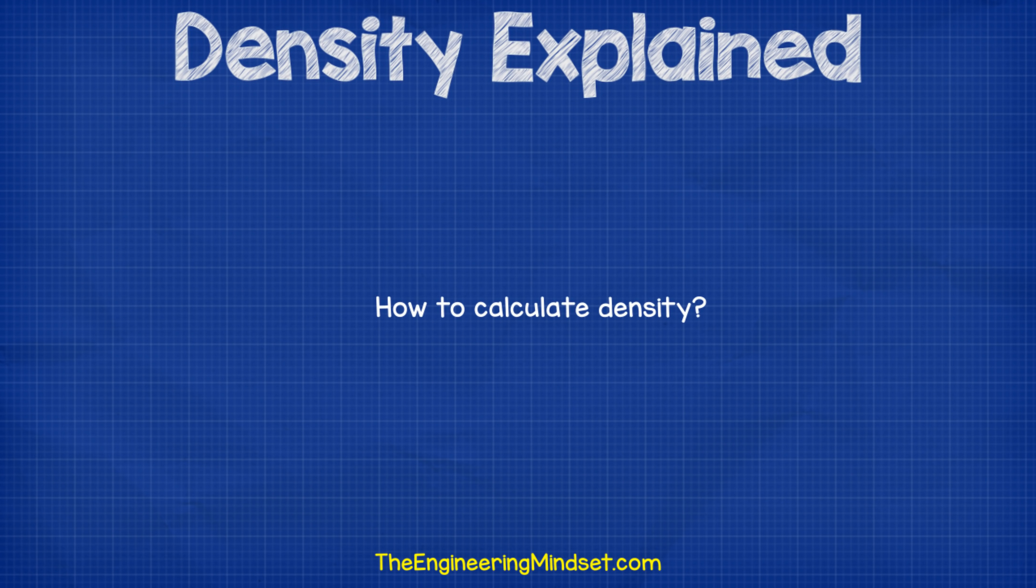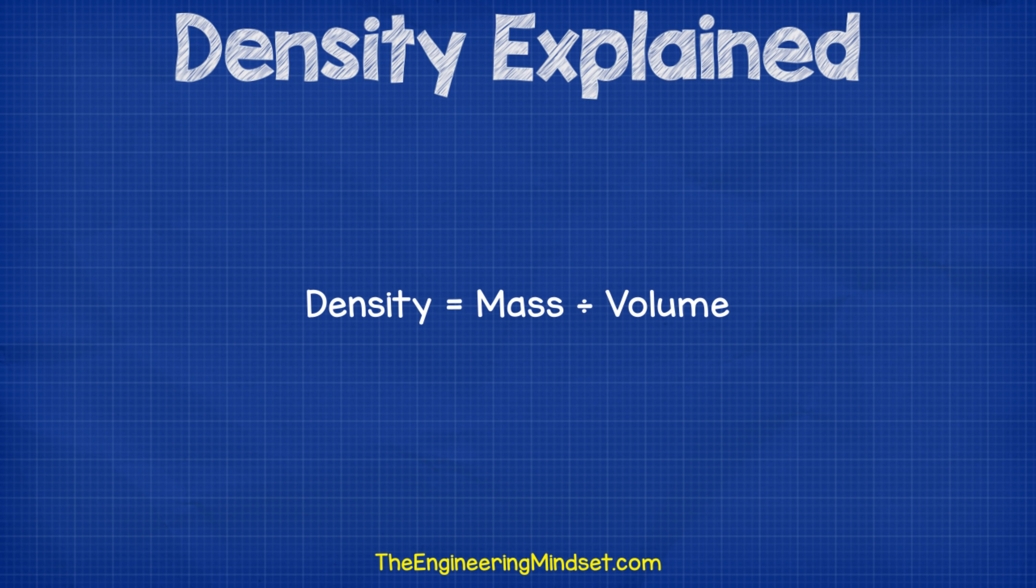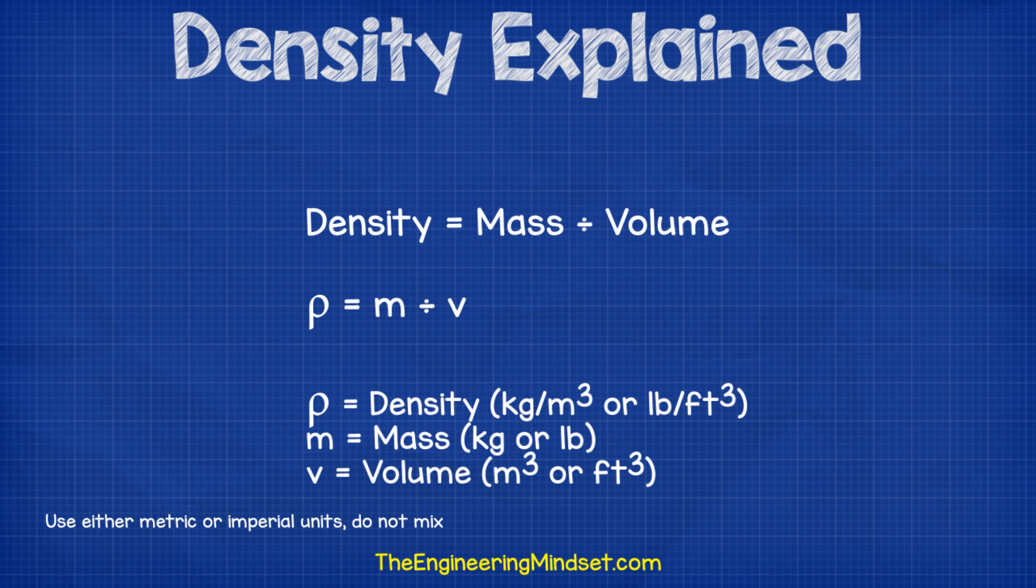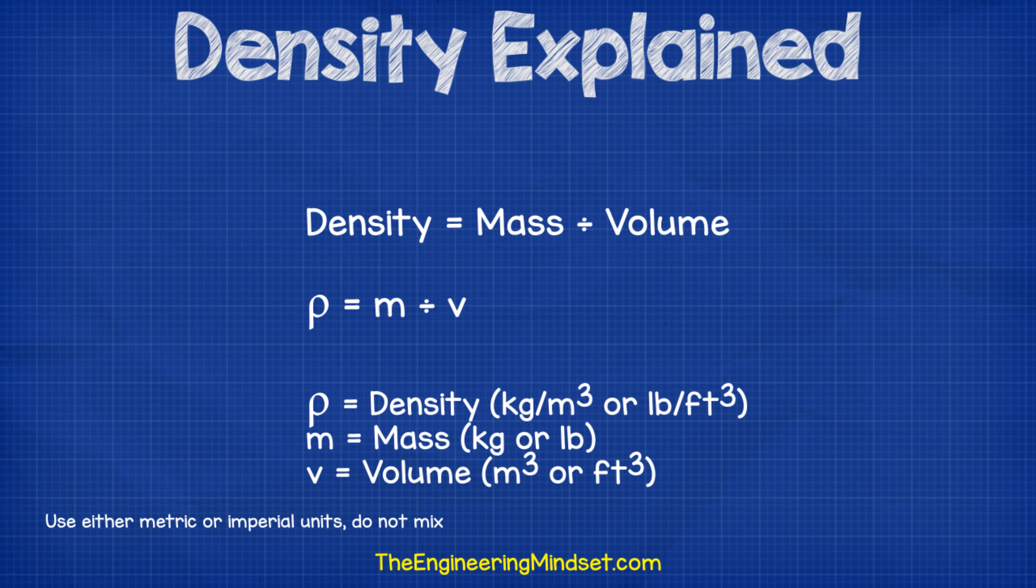So how do we calculate density? Well it's very simple. All we have to do is divide the mass of an object by its volume. And for this we use the formula rho equals m divided by v. The Greek symbol of rho is usually used to represent density. The m equals the mass that the material weighs and the v represents the volume of the material.